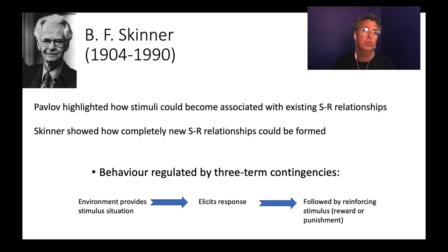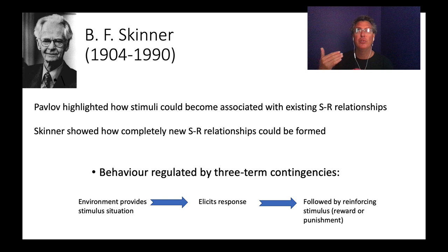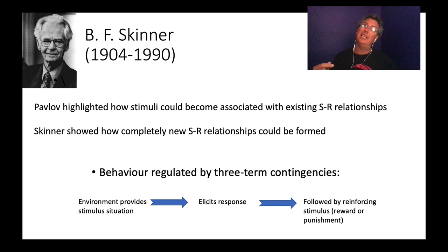Skinner took it the next step. He said: cool, you can connect a new stimulus like a bell to an existing relationship and create a new relationship. But what Skinner showed is how you could create brand new stimulus-response relationships — you didn't have to build on existing ones. The important thing that differentiates Skinner is this third step: the consequences of behavior. Pavlov never talked about consequences.